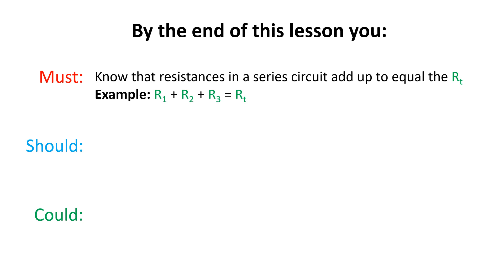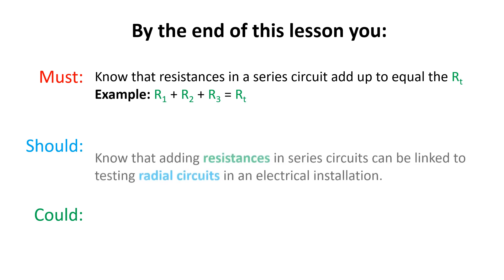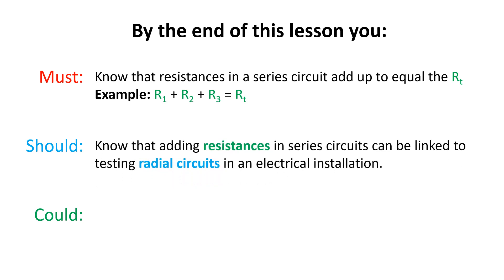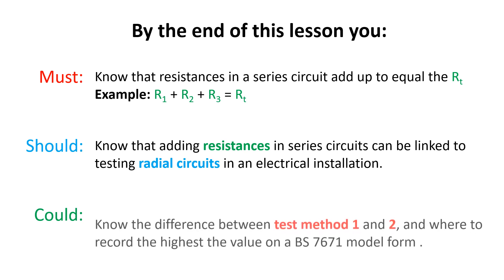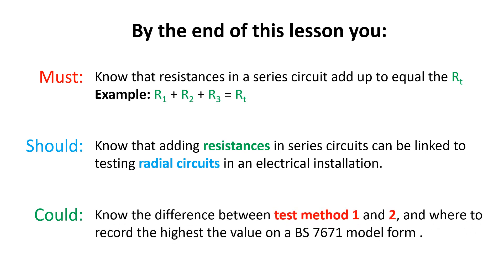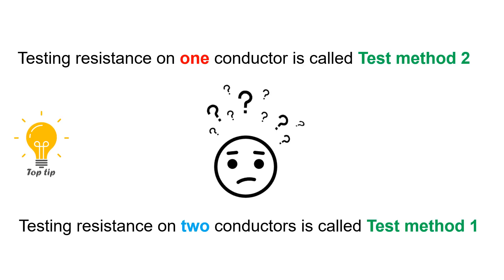Here is a quick recap of the learning outcomes for this video. You must know the resistances in a series circuit add up to equal the RT. You should know that adding resistances up in a series circuit can be linked to testing radial circuits in an electrical installation, and some of you could know the difference between test method one and test method two. If not, here is a quick reminder. Testing one conductor is test method two, and testing two conductors is test method one.